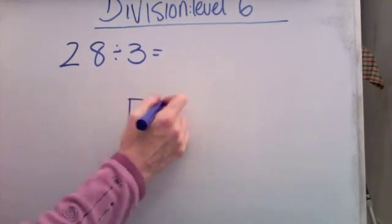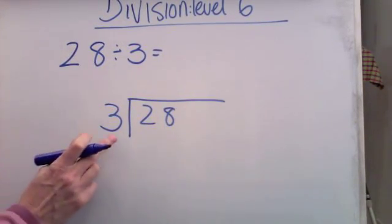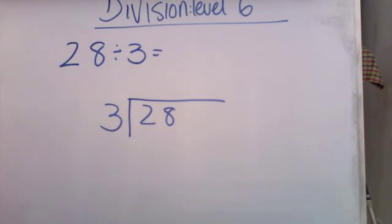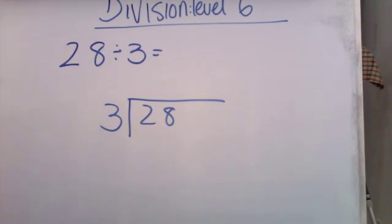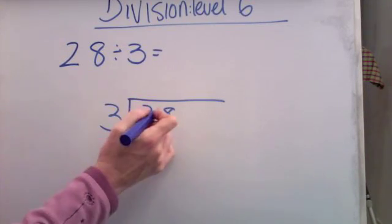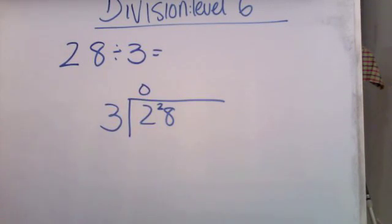I'm going to write it out this way with the number I'm dividing by on the outside and the number I'm dividing on the inside. Straight away I'm going to say how many threes are there in two? Well, there aren't any, it's too small, so I'll carry the two forward. How many threes are there in 28?